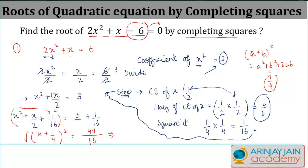So this means that if I take the square roots on both sides, I will get x + 1/4 = ±7/4. √(49/16): 49's square root is 7, 16's square root is 4. Now what I need to do is just solve this.